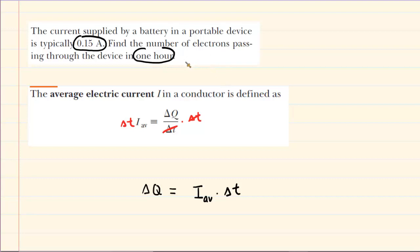One hour would need to be converted into a standard unit of seconds. We know that one hour is equivalent to 60 minutes, and one minute is equivalent to 60 seconds. If we set up a conversion like this, the hours cancel and the minutes cancel. We multiply 60 by 60, we get 3600 seconds. That's going to be the value of our delta T.